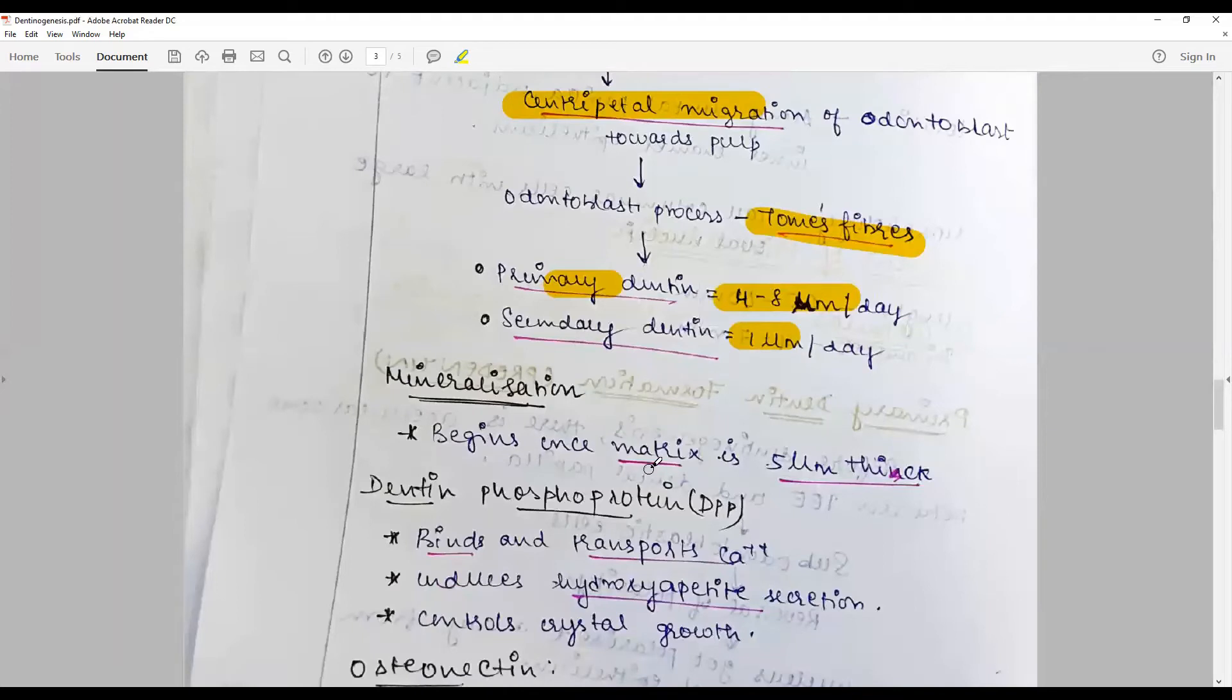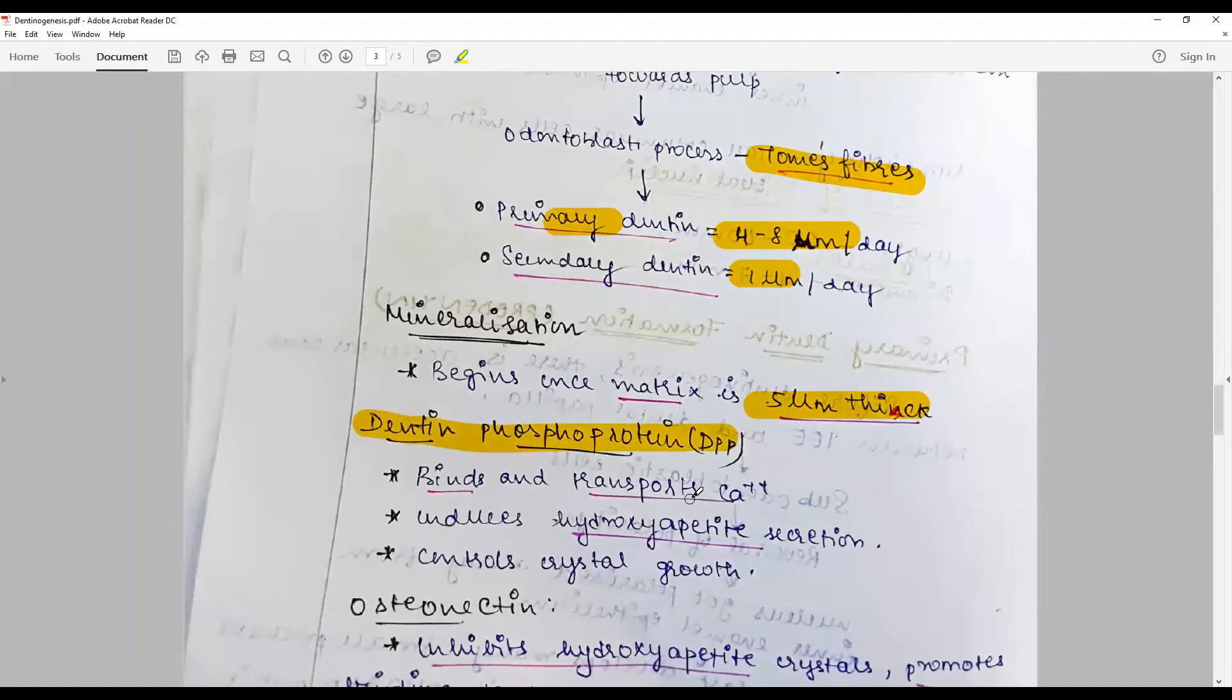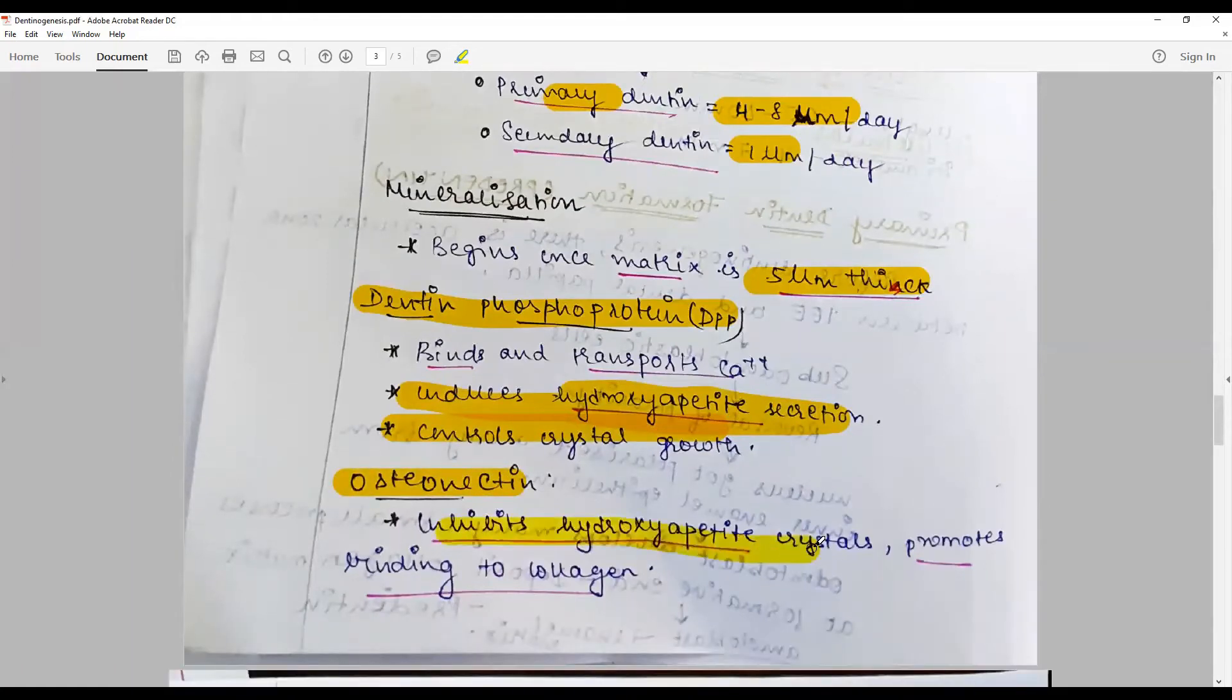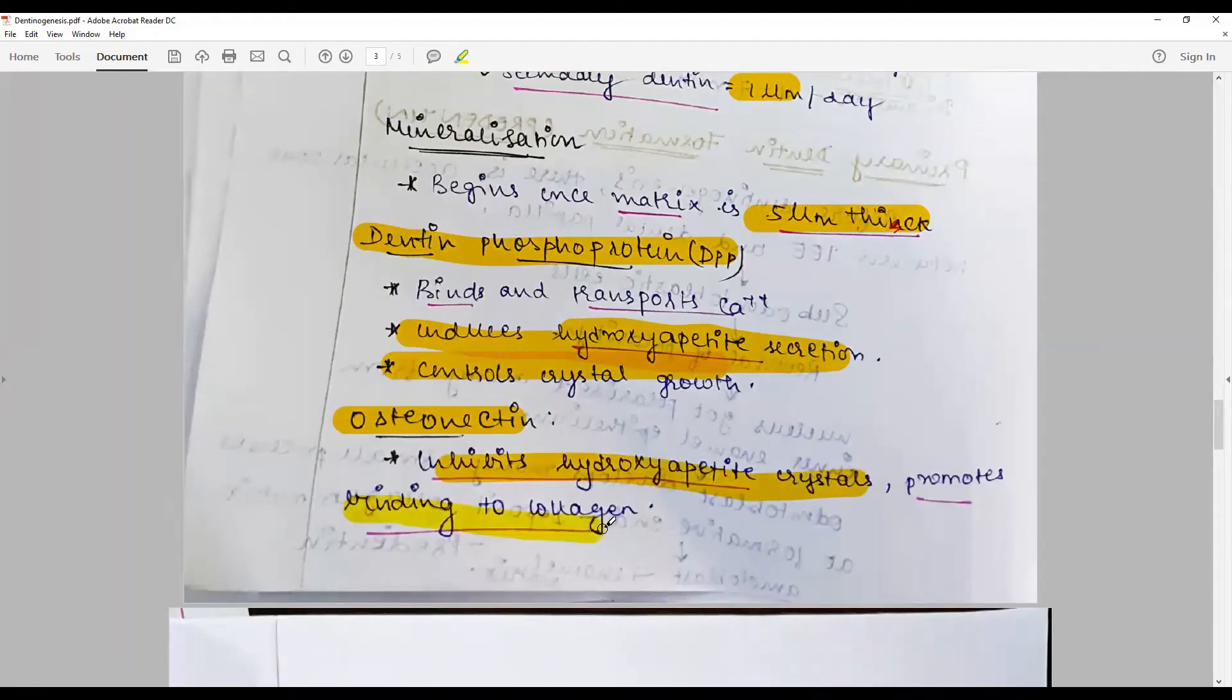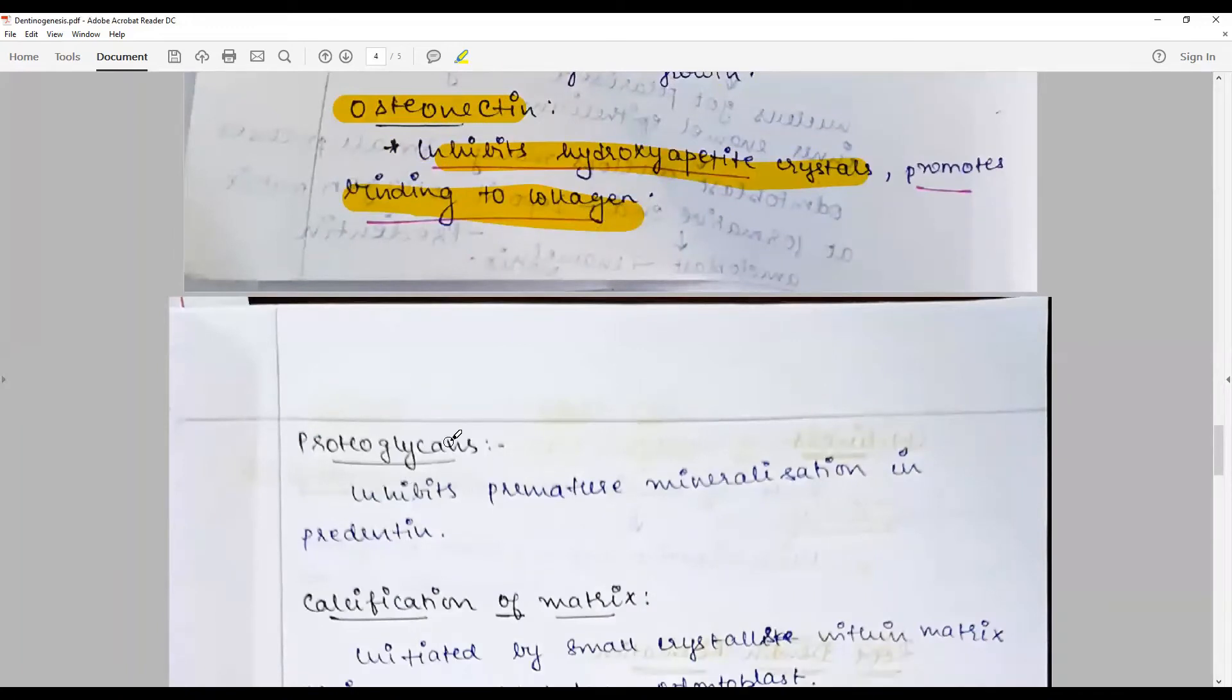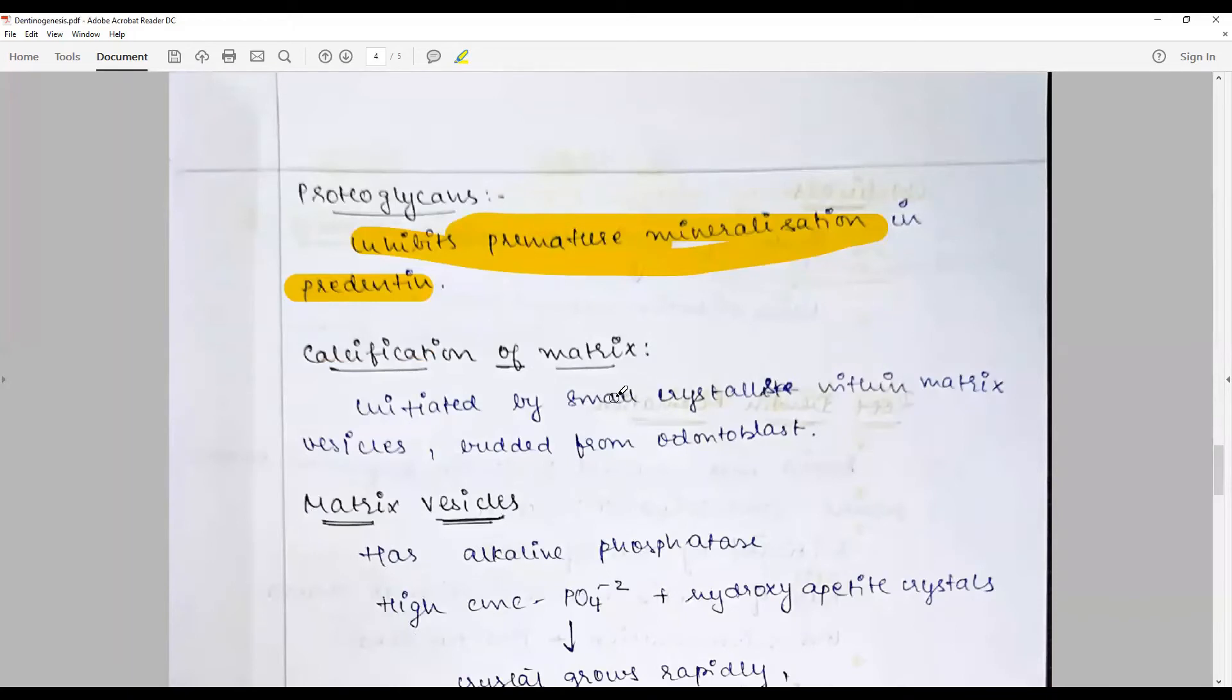Mineralization begins once the matrix is about 5 micrometers. The protein dentin phosphoprotein binds and transfers calcium, induces hydroxyapatite secretion, and controls crystal growth. The protein osteonectin serves as an inhibitor for hydroxyapatite creation and promotes binding to collagen, creating a strong network. Other components such as proteoglycans inhibit premature mineralization in the predentine. Calcification of matrix is initiated by small crystals within matrix vesicles, best explained by the matrix vesicle theory.